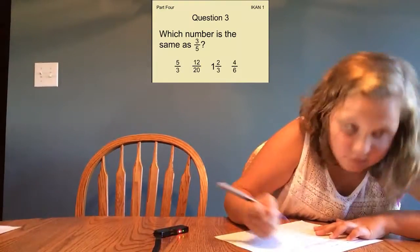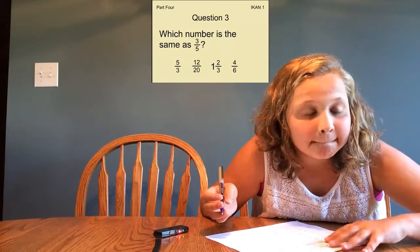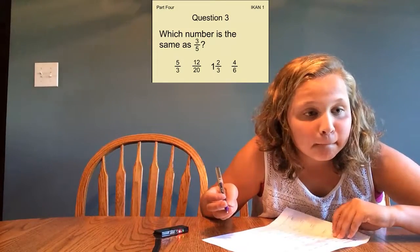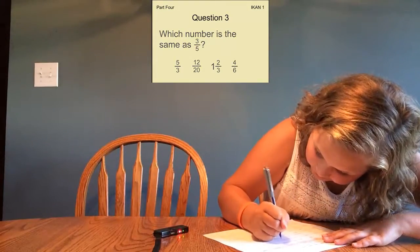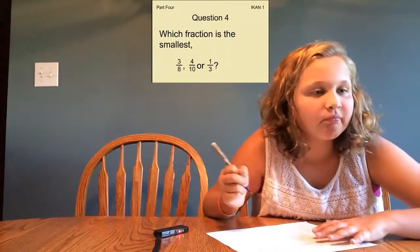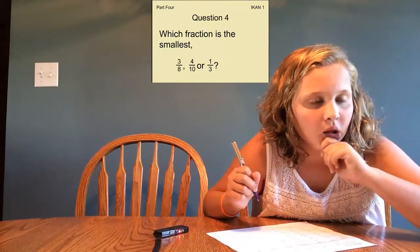Which number is the same as 3 5ths? 5 3rds, 12 20ths, 1 2 3rds, 4 6ths? Which fraction is the smallest? 3 8ths, 4 10ths, or 1 3rd?